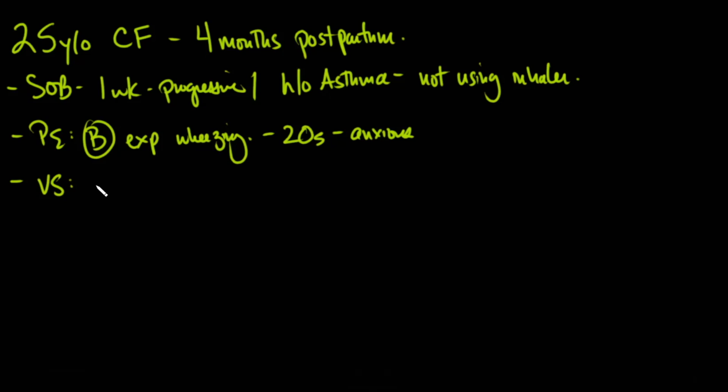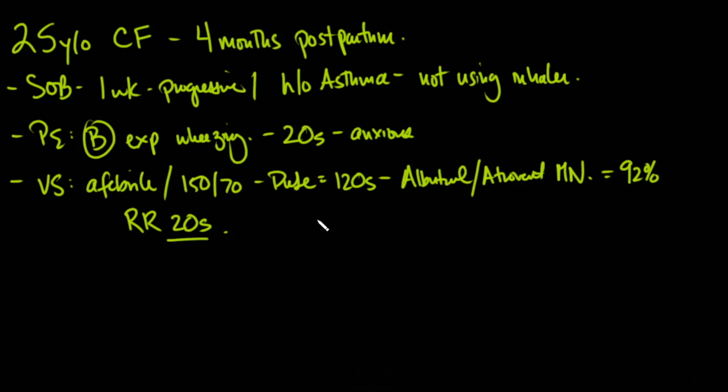Her vital signs, she's afebrile. Her blood pressure is 150 over 70. Pulse is already in the 120s, and that's because she's already received an albuterol and atrovent nebulizer. She's saturating in the low 90s, about 92%, and as we said, her respiratory rate is in the 20s. You do a blood gas, and her pH looks something like 7.35, PCO2 is in the high 40s, PO2 is in the 80s, and bicarb is 24.